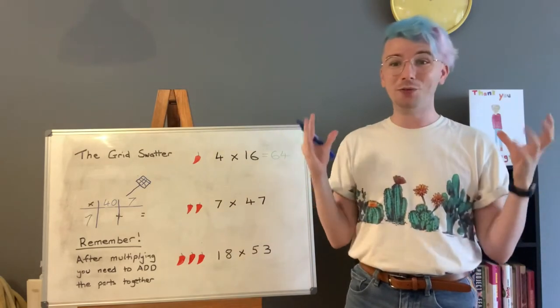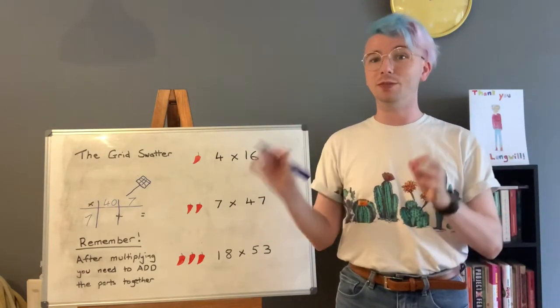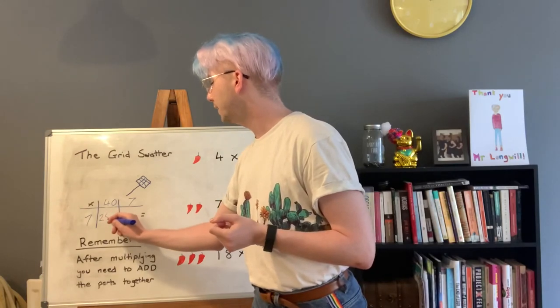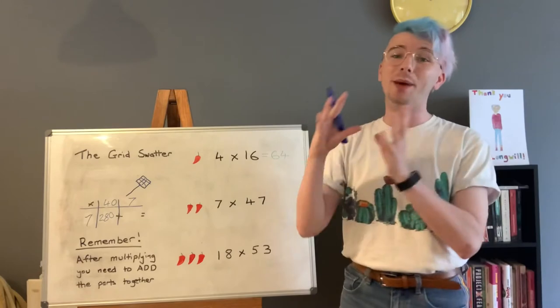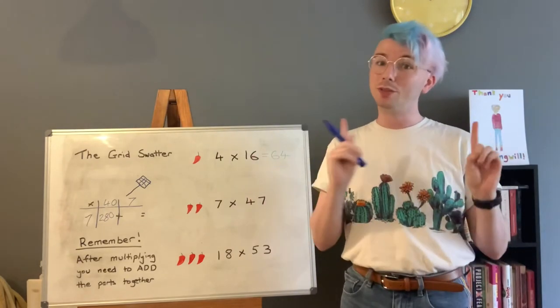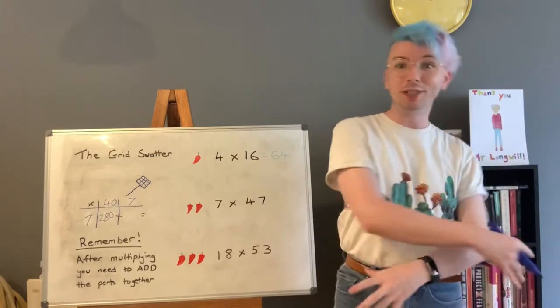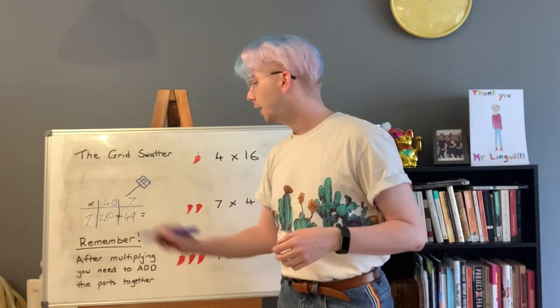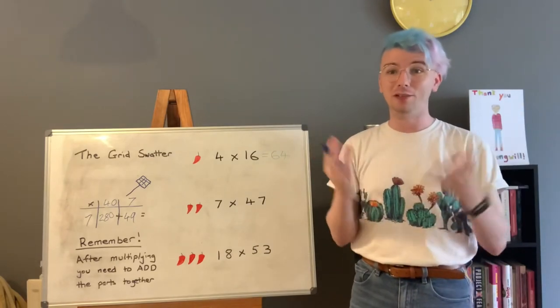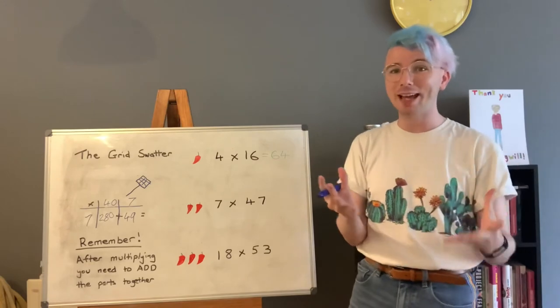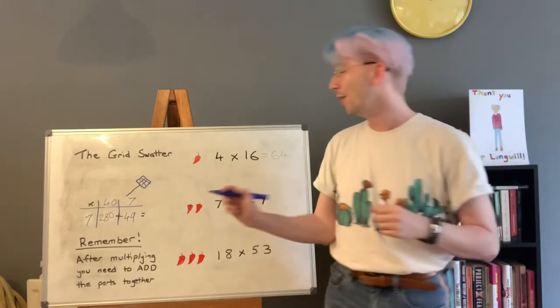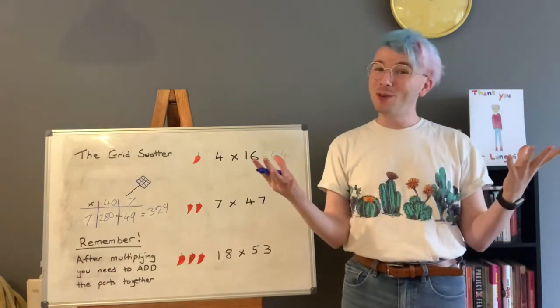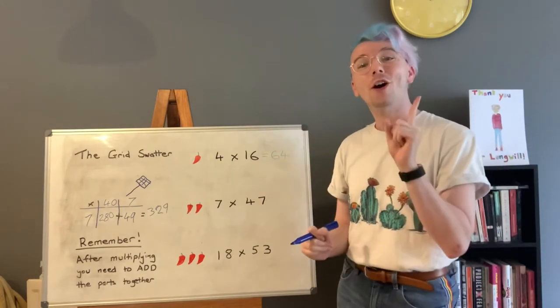Then add those parts together to get our final answer. With 7 times 40 you could do 7 times 4 then times 10 but I know that 7 times 40 is 280. But again you could do 7 times 4 to get 28 and multiply that by 10 to get 280. Now 7 times 7. Again more manageable than doing 7 times all of 47. 7 times 7 is 49. Now we need to add those parts together to get our final answer. So what is 280 plus 49? I got to the answer of 329 which is the final answer to our medium solution. How did you get on with that one? Let me know in the comments below and I'll be back in a moment with our hot solution.